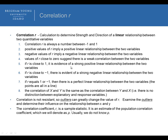R close to one is evidence of a strong positive linear relationship. R close to negative one is evidence of a strong negative linear relationship. If R equals 1 or negative 1, there is a perfect linear relationship and all points fall on the line. The correlation of x and y is the same as the correlation between y and x — there's no distinction between what's the explanatory and what's the response variable.